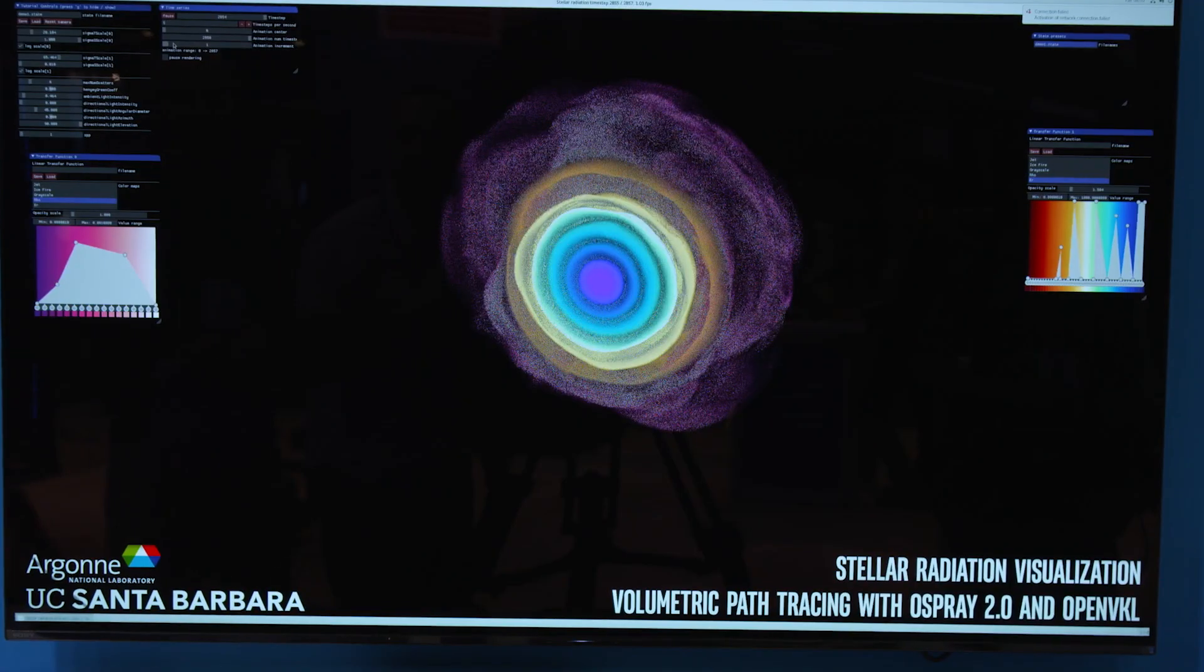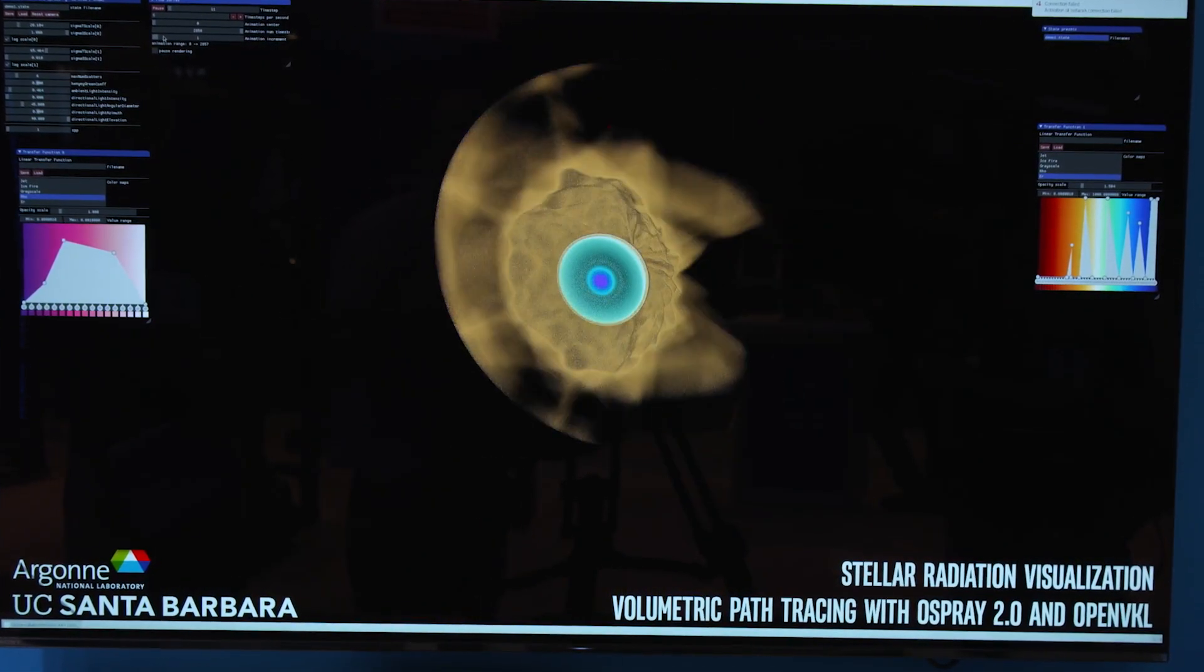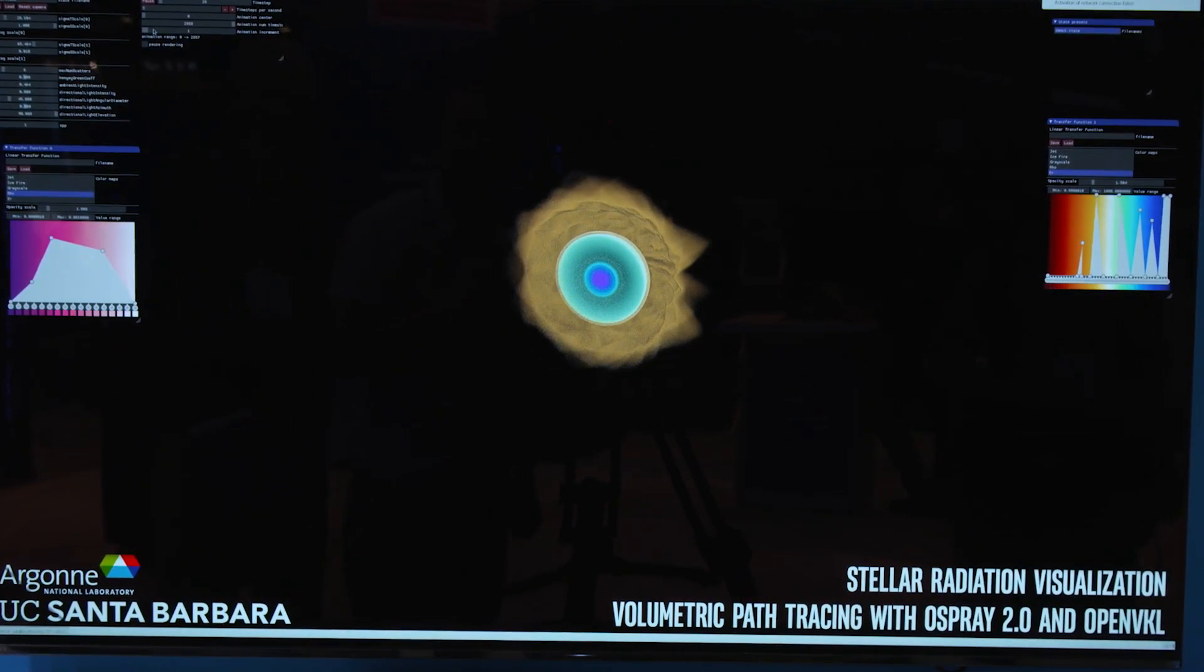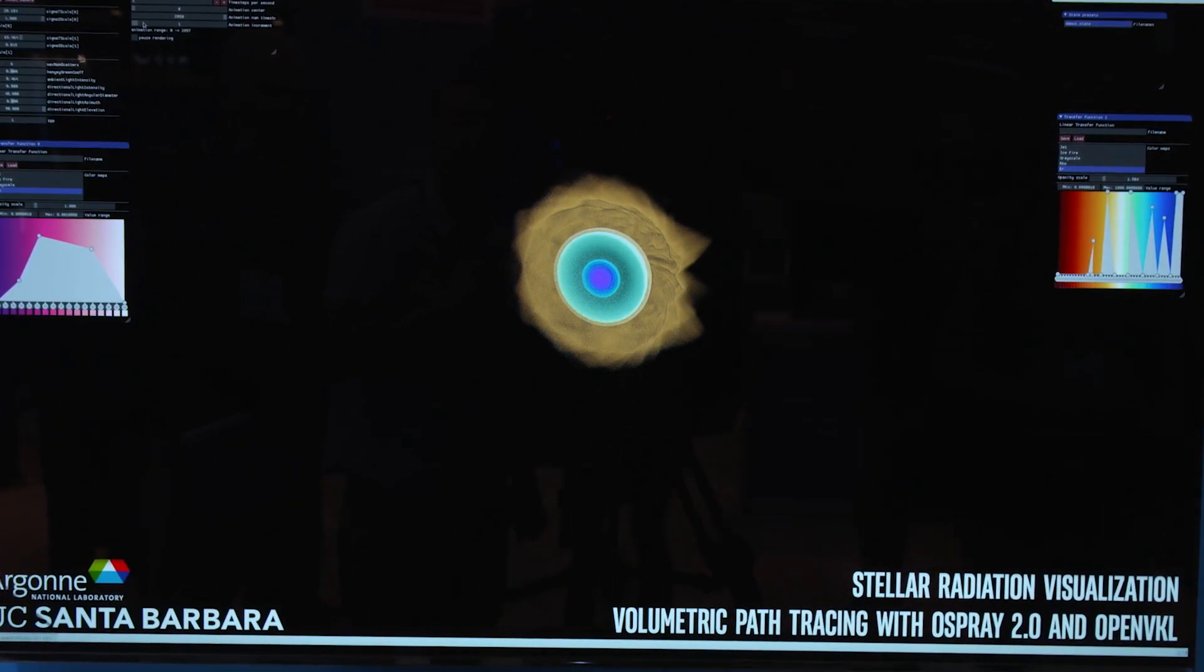Our first demo here is a stellar radiation simulation from Argonne National Laboratory where we can take 1.5 terabytes of simulation data, which is a time series of 2,800 time steps, and we can render it interactively because of optane memory technology.